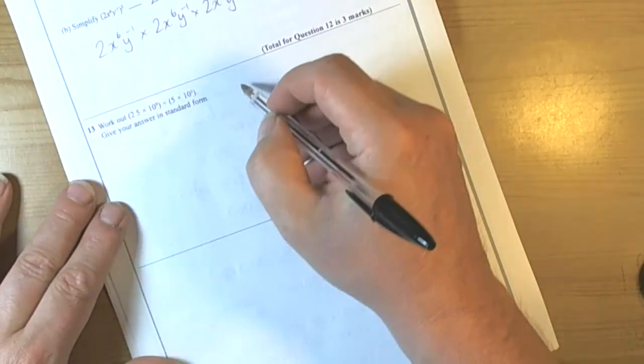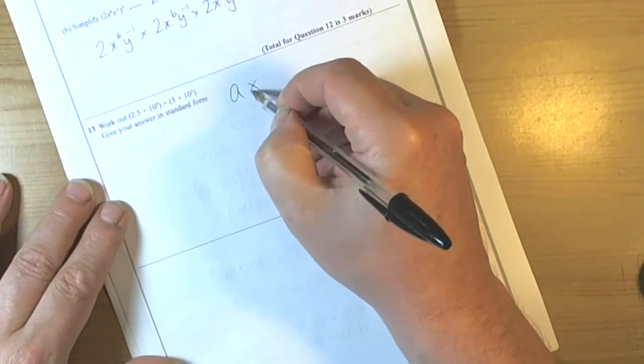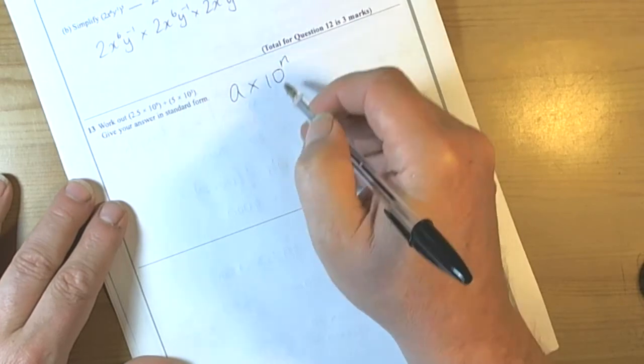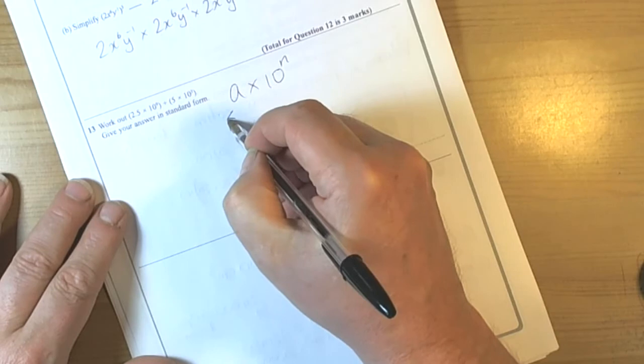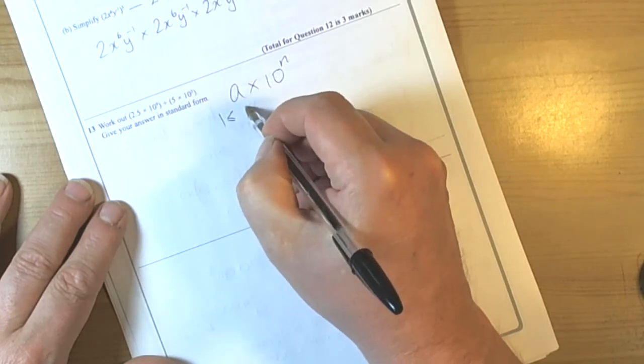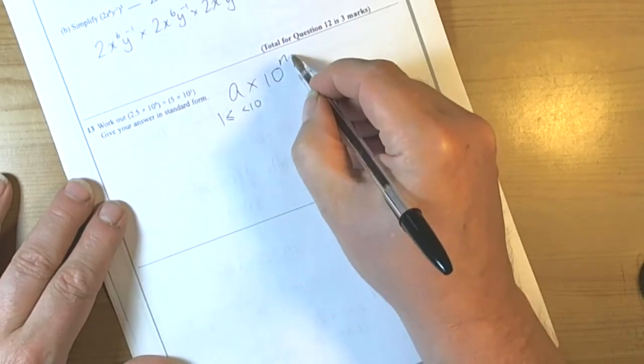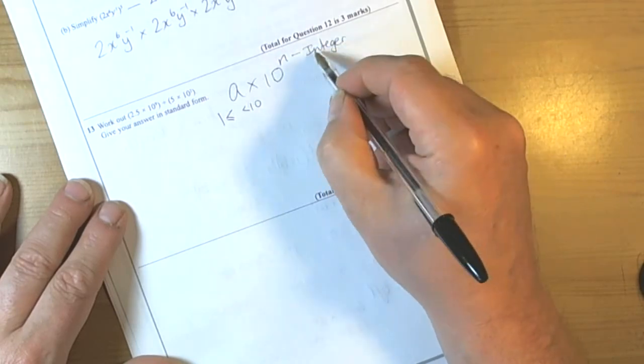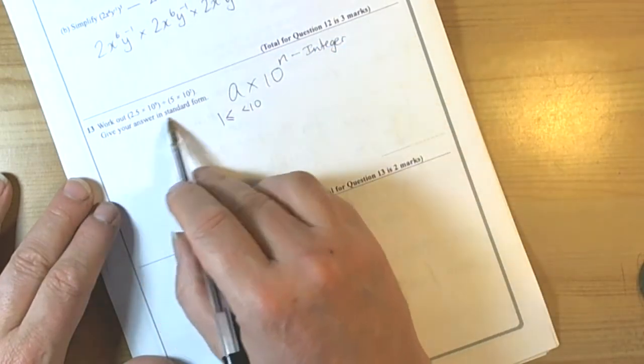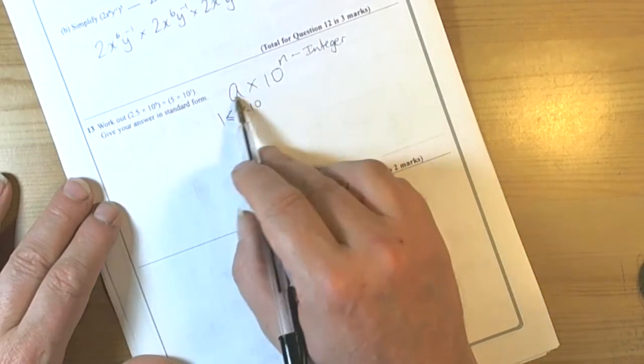Standard form is always of the format something times 10 to the power of n, where that something has to be greater than or equal to 1 but less than 10. And n is always an integer, which is a positive or negative whole number. So it's asking us to give our answer in standard form, so we must make sure it looks like this.